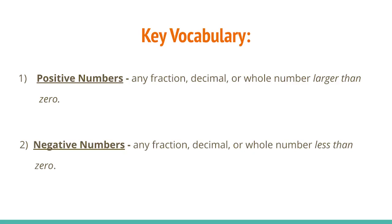So key vocabulary, what are positive numbers? Well, those are any fraction, decimal, or whole numbers that are larger than zero. And if we have negative numbers, those are any fractions, decimals, or whole numbers that are less than zero. So a lot of these are going to use zero as a guide to help us between the distinction between positive and negative numbers.